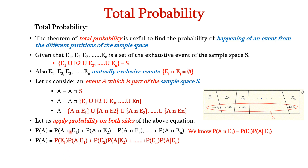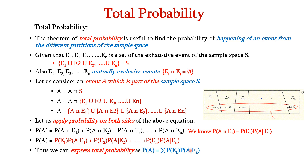So we can write P(A intersection e1) as P(E1) times P(A given e1). Likewise, we can replace each individual probability up to P(A intersection en). Thus, we can express the total probability as P(A) equals the summation of P(Ek) times P(A given ek), where k equals 1 to n. This is the theorem of total probability.